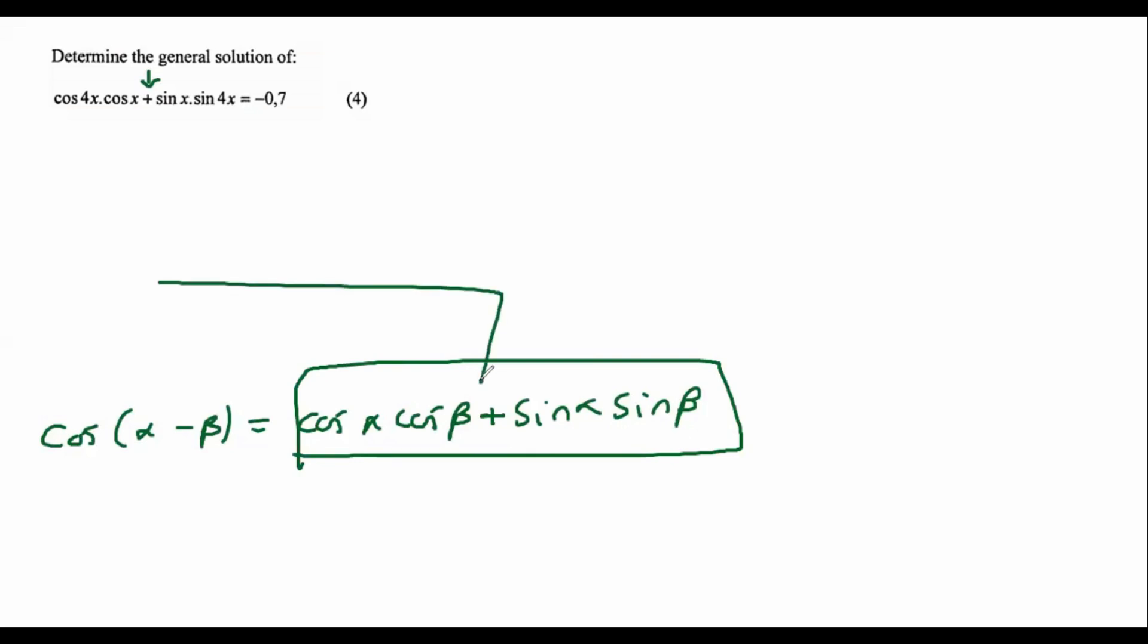So it's going to become cos of 4x minus the other angle, which is just x. And then that's going to be equal to negative 0.7.